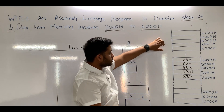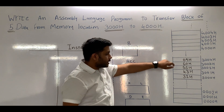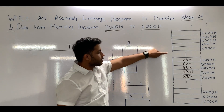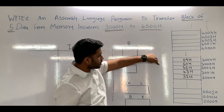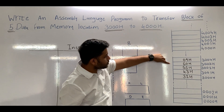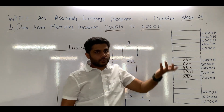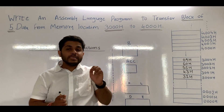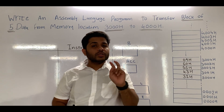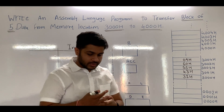This 5 data should be transferred to 4000H onwards. Data stored in 3000H should be transferred to 4000H, data in 3001 to 4001, 3002 to 4002, 3003 to 4003, and 3004 to 4004. We can perform this program using two simple instructions: LDA and STA.